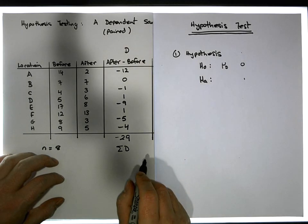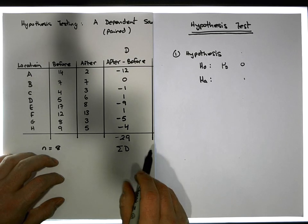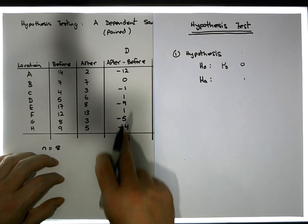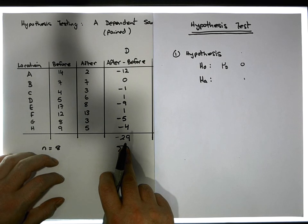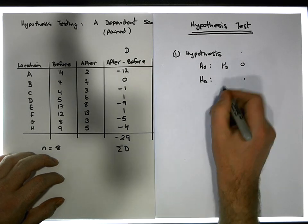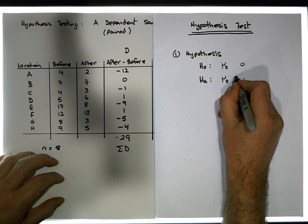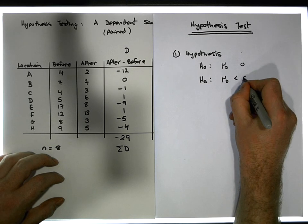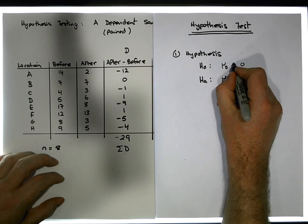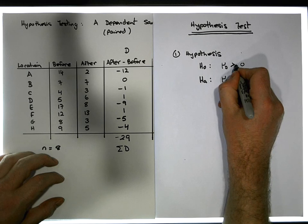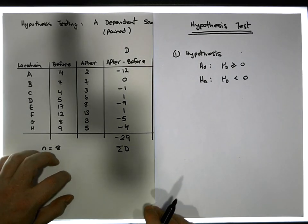I want to ascertain whether there's been a significant change, and more importantly a reduction. So the alternative hypothesis is that μd is less than zero, which means my null position is that μd is greater than or equal to zero.